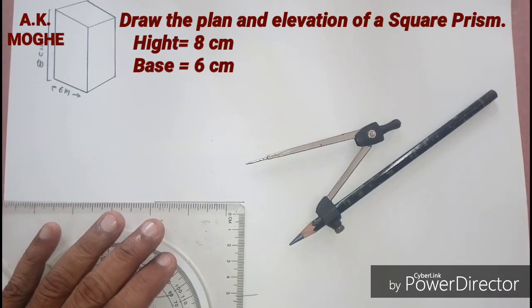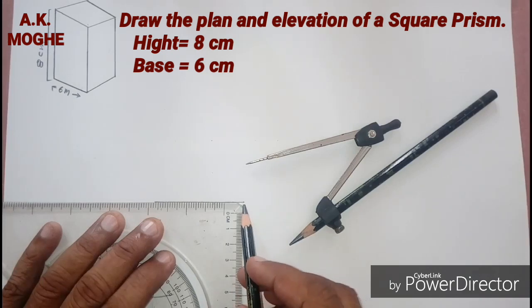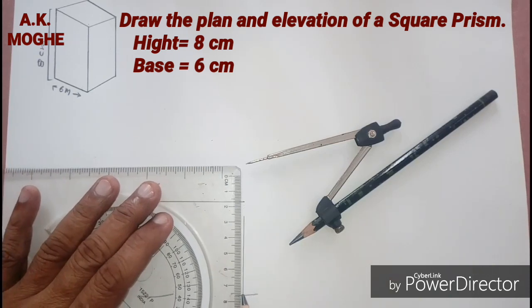The front view of the prism is nothing but a rectangle, and the top view of the prism is nothing but a square. So first we are going to draw the top view.